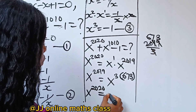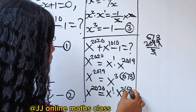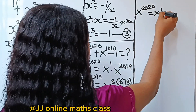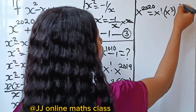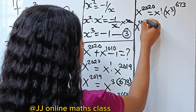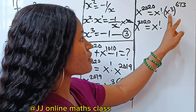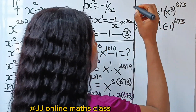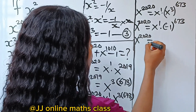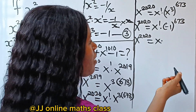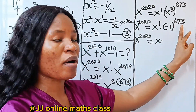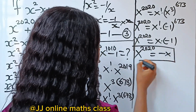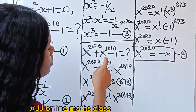So x to the power of 2020 equals x times (x cubed) to the power of 673. Since x cubed equals minus one, we have x times (minus one) to the power of 673. Since 673 is odd, (minus one) to the power of 673 is minus one, so x to the power of 2020 equals minus x — equation four.